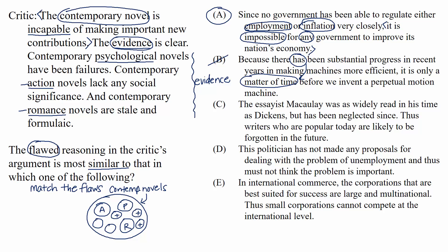Choice C: The essayist Macaulay was as widely read in his time as Dickens but has been neglected since. Thus, writers who are popular today are likely to be forgotten in the future. This argument's conclusion doesn't work for what we're looking for — not only is the language weaker ('likely'), but it's dealing with what will happen in the future, whereas the stimulus is about what contemporary novels are incapable of right now.